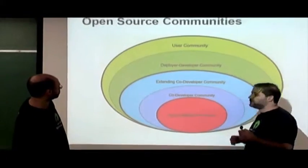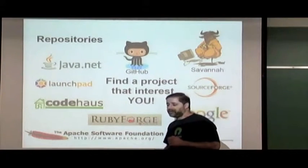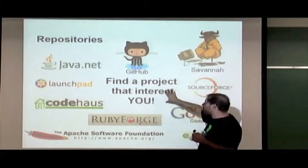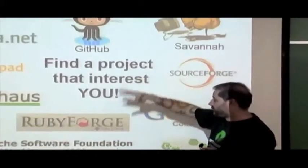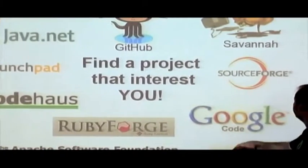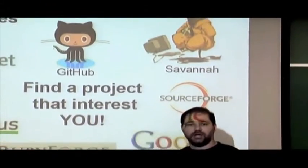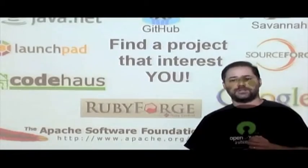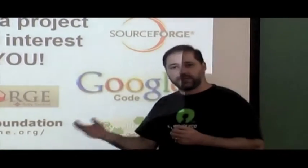The whole idea of participation is finding where and how you want to participate. One thing we always say: find a project that interests you. There are many places to look — Java.net for Java projects, Savannah for GNU projects, the Apache Software Foundation, RubyForge, Google Code, and of course GitHub, which today is one of the most-used repositories for free and open source software. Even if you are a Microsoft developer, there is a large community of open source software around Microsoft products as well.